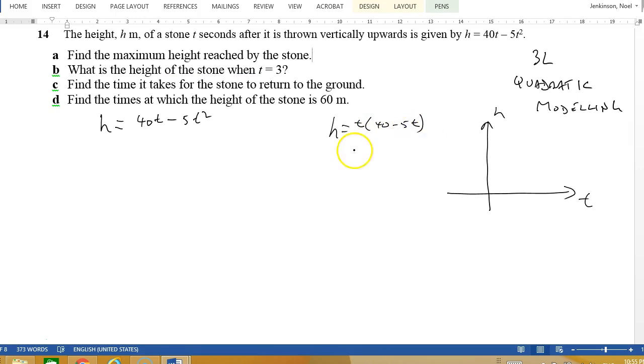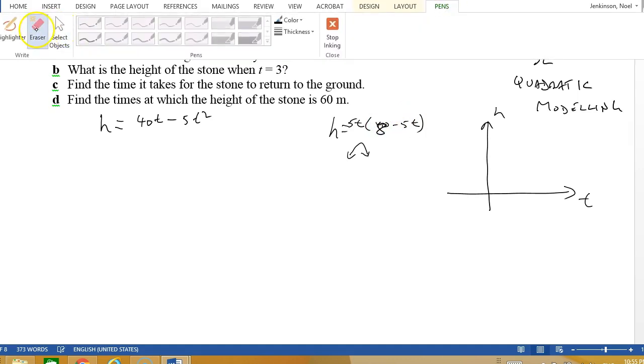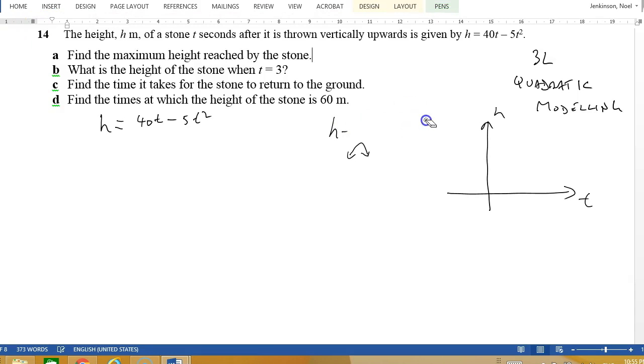I can see this is an upside down parabola. I could take 5t out and have 8 minus t inside there. I'll fully factorize it: 5t times (8 minus t). That makes it even easier to see it's upside down.